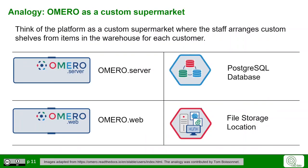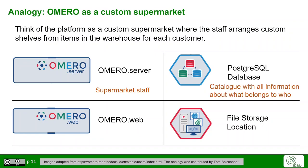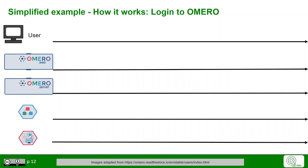To understand how these components work together, let's use an analogy. Think of the platform as a custom supermarket where staff arranges custom shelves for each customer. In this analogy, OMERO Server would be the supermarket staff running around and organizing everything. The PostgreSQL database holds the catalog with all the information about which items belong to whom, so that shelves can be made up. OMERO Web would be the shelves for display, where OMERO Server puts all the information. The actual warehouse where all the items are held corresponds to the file storage location.